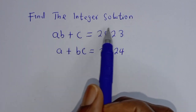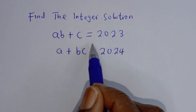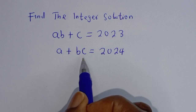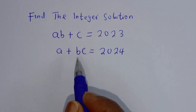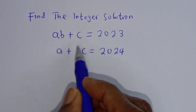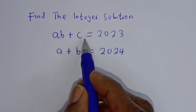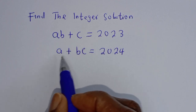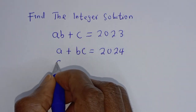Find the integer solution: ab + c = 2023 and a + bc = 2024. Hello, welcome to Math Focus. We want to find the integer solution from this given equation ab + c = 2023 and a + bc = 2024.